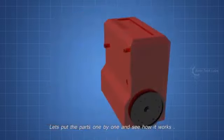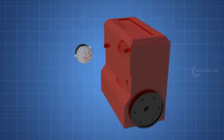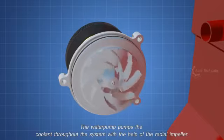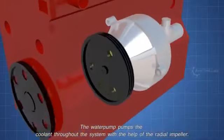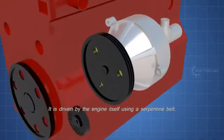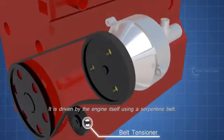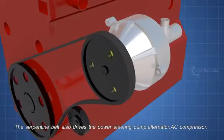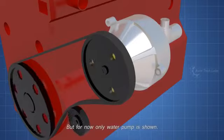Let's put the parts one by one and see how it works. The water pump pumps the coolant throughout the system with the help of the radial impeller. It is driven by the engine itself using a serpentine belt. The serpentine belt also drives the power steering pump, alternator, AC compressor. But for now only water pump is shown.